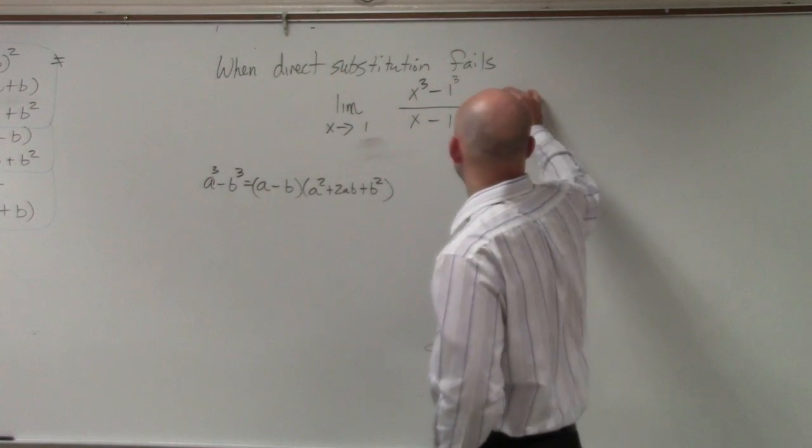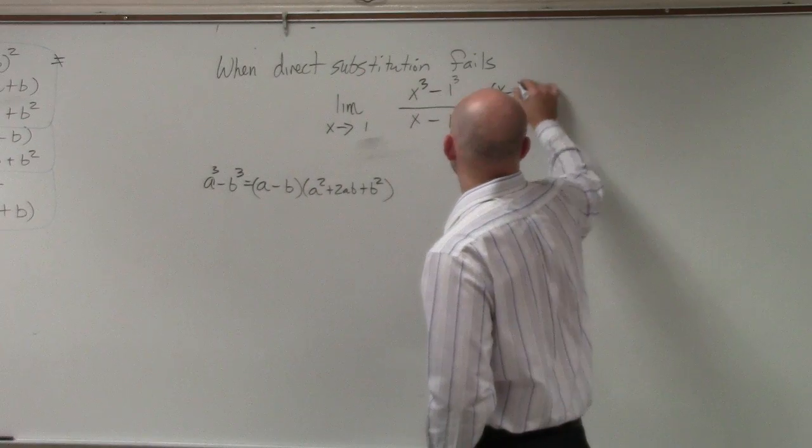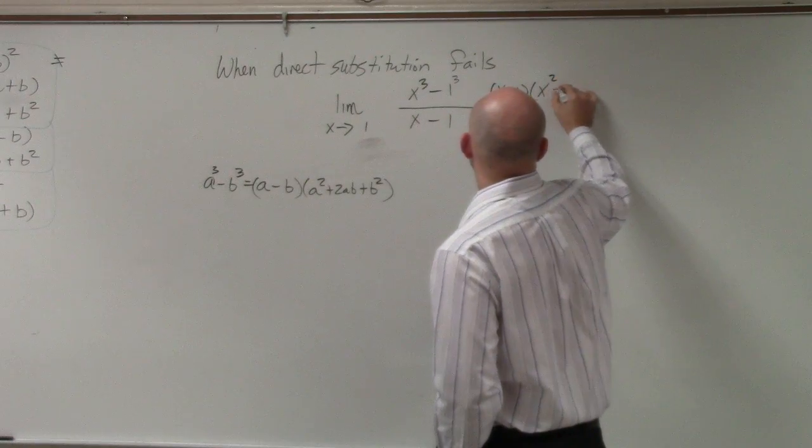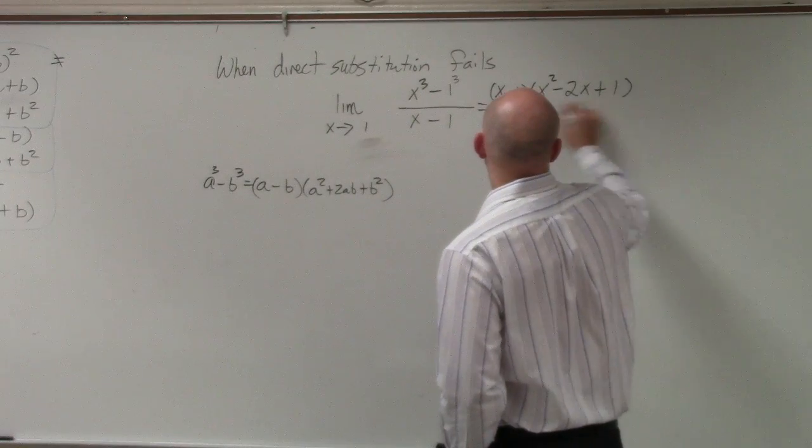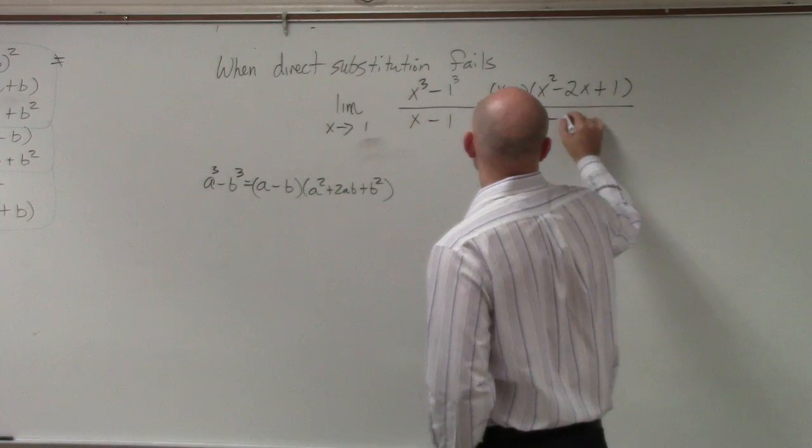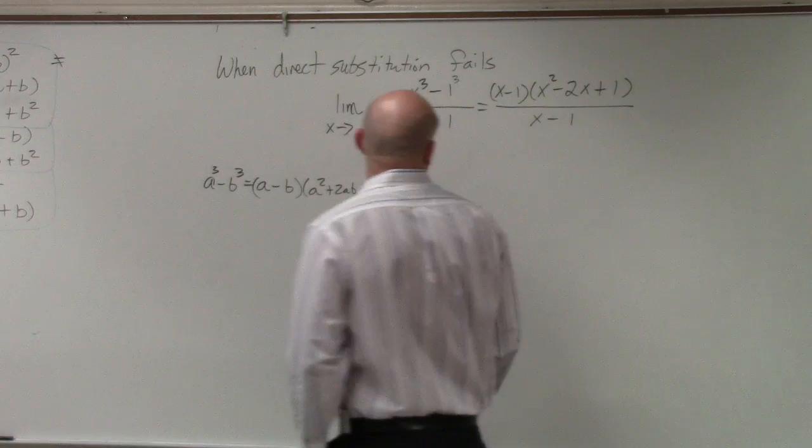So by using that, I can identify this to be (x minus 1) times (x squared minus 2x plus 1) all over (x minus 1). That's plus, sorry.